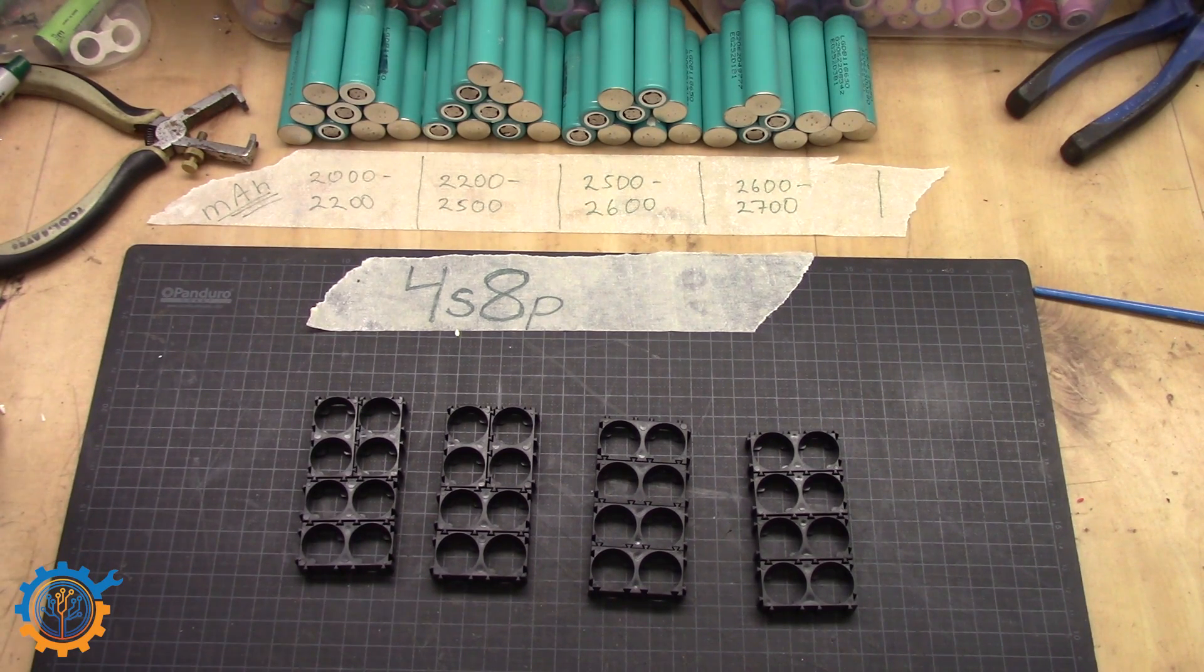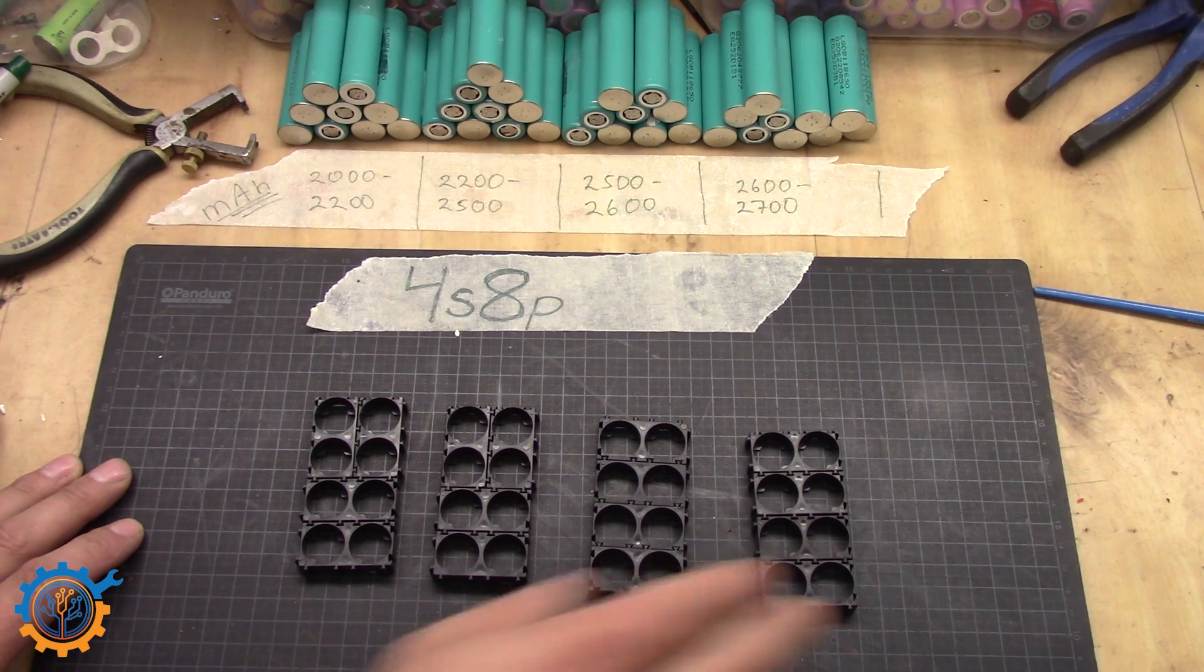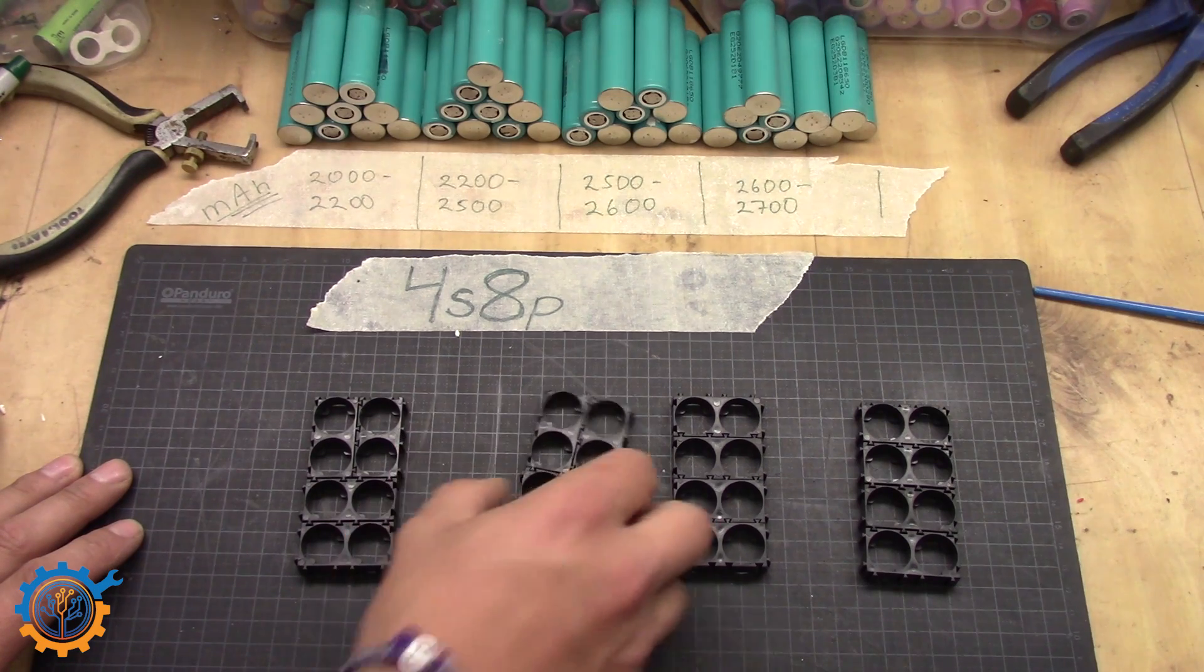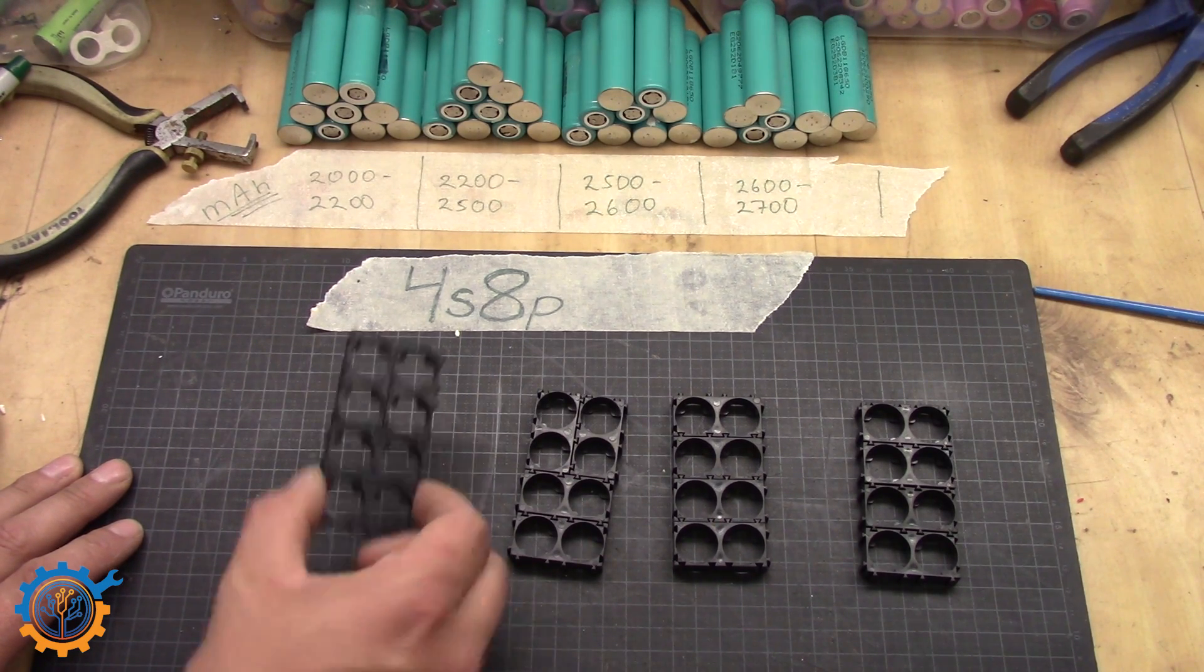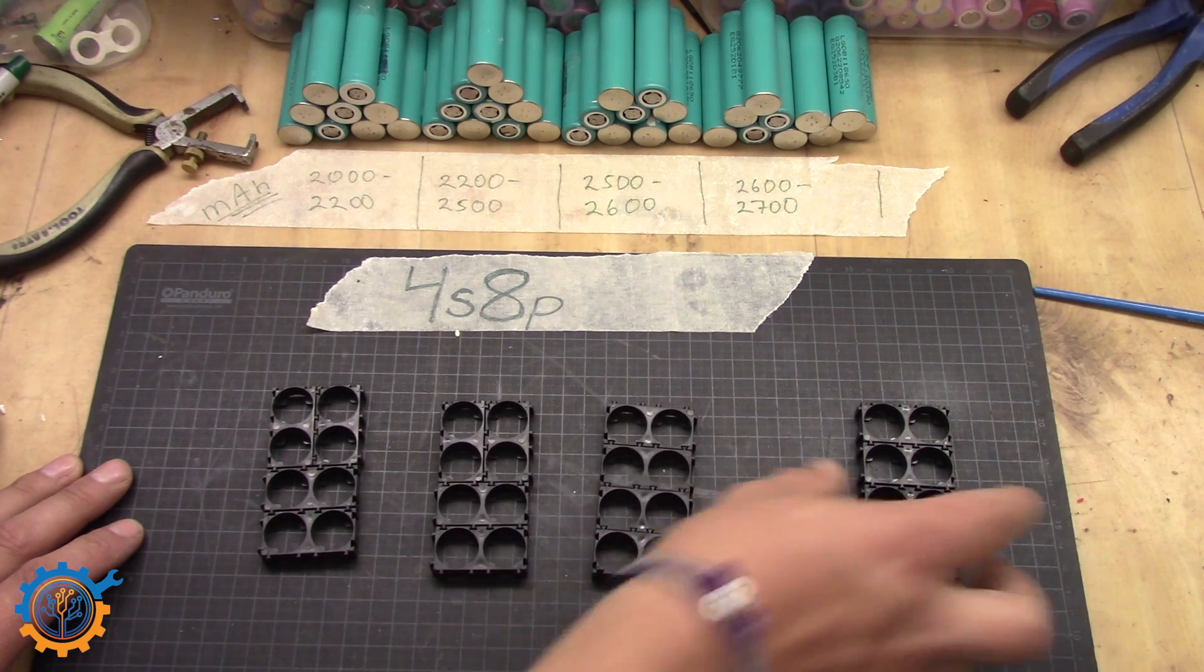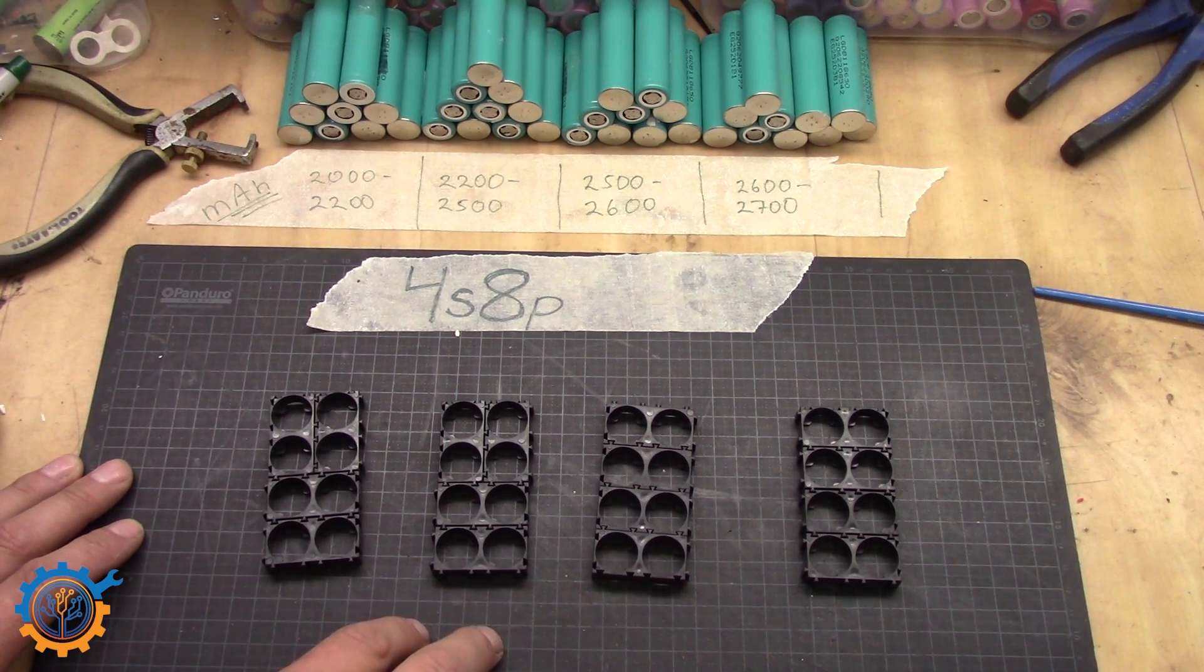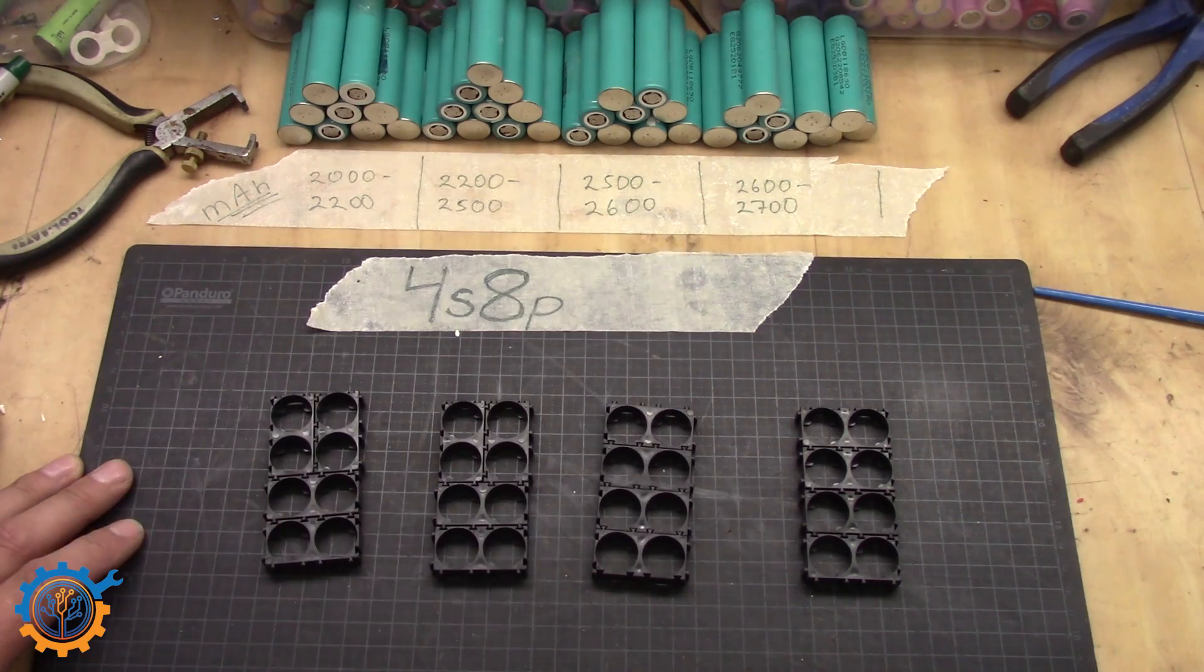I do suggest that you always wait until you actually have all the cells. Because if you start to build a pack and then you build the next one and then suddenly you don't have any cells that are good enough, you will end up with a pack that is uneven. So in our case where we are going to build a 4S 8P we need 32 cells. So what I have collected here is somewhere above 32 cells.